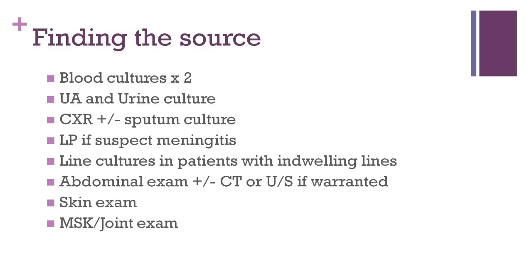In terms of searching for the source of infection, very often it can be obvious from the patient's history or exam findings. However, sometimes it is not so clear. Universally, all of these patients need to have blood cultures drawn. The workup also typically includes a urinalysis and culture, a chest x-ray and possibly sputum cultures, and a focused physical exam to assess for intra-abdominal pathology, skin infections, or joint or bone infection. A lumbar puncture may be obtained if meningitis is suspected. If a patient has an indwelling line, like a home PICC line or a dialysis line, cultures may be drawn off that line to assess if it is the source.